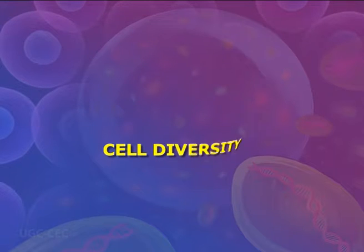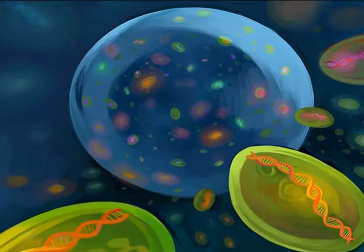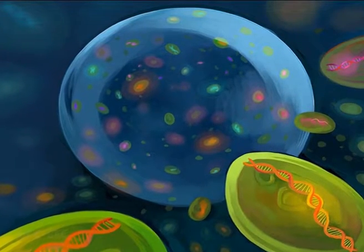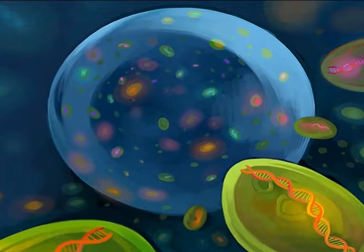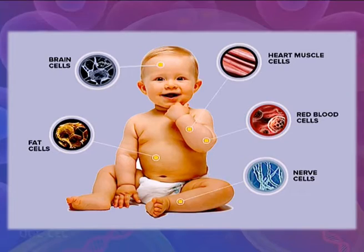Now we will see cell diversity. Not all cells are alike. The main types of cells are prokaryotic and eukaryotic, and each acts as a unit of life. Even cells within the same organism show enormous diversity in size, shape, and internal organization.